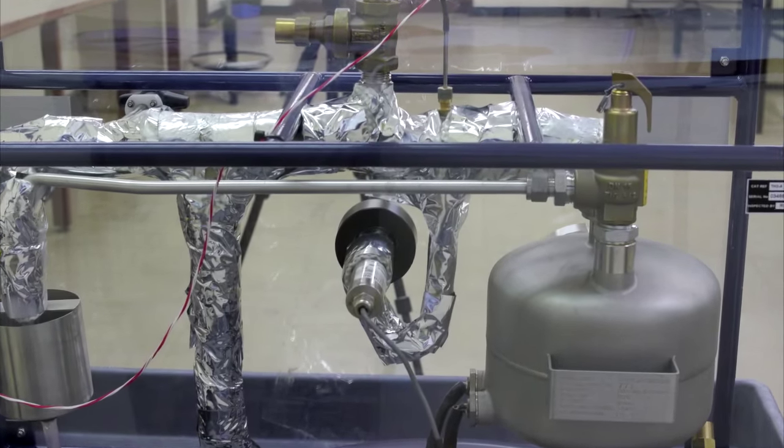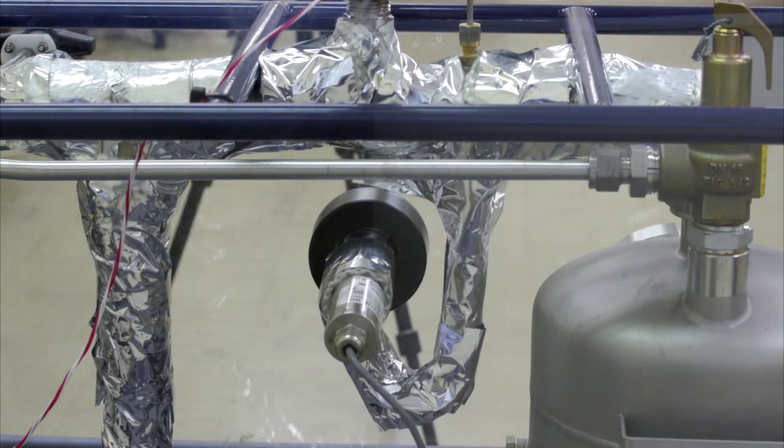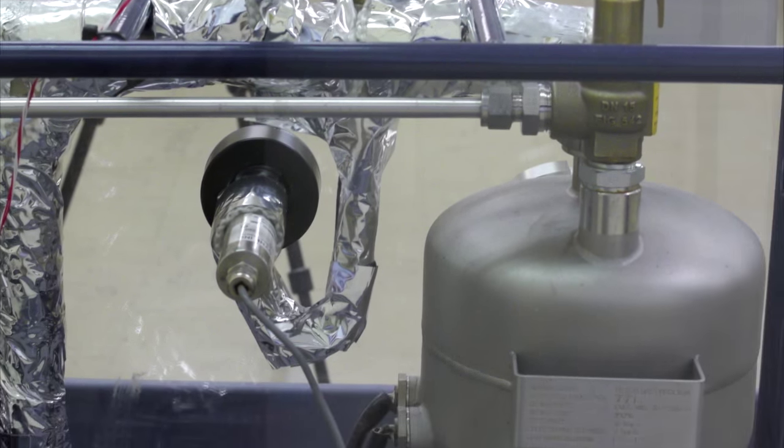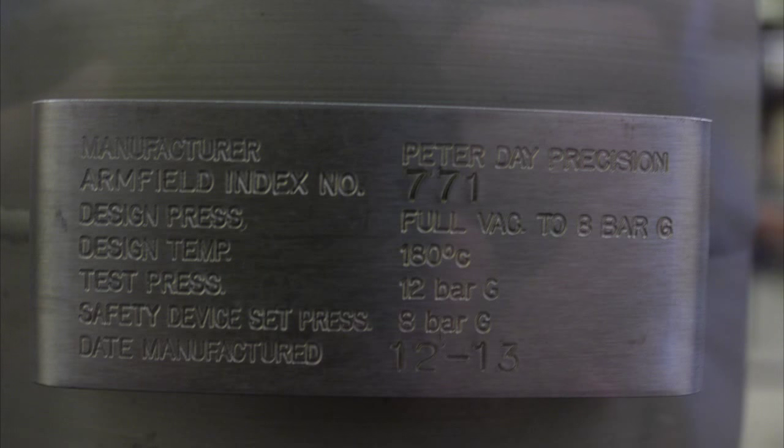Behind the bourdon gauge is a pressure sensor, which supplies a digital reading of the gauge pressure to the control box. The boiler plate indicates that a pressure relief valve will open automatically if boiler pressure ever exceeds 8 bar gauge.